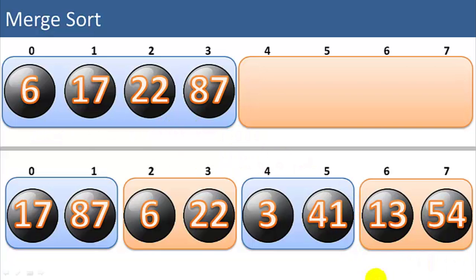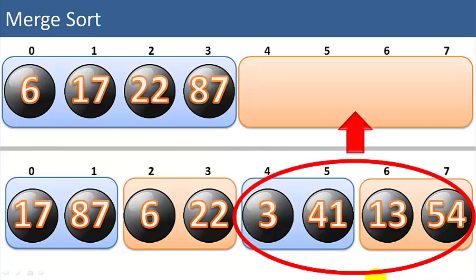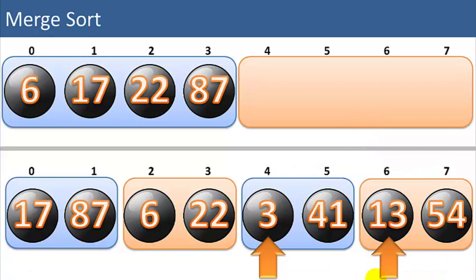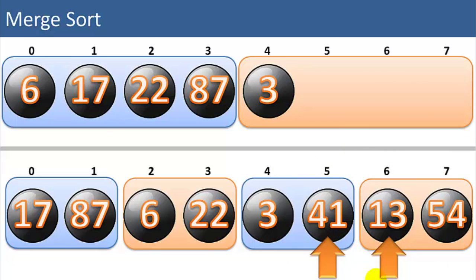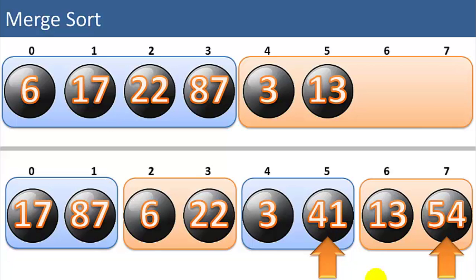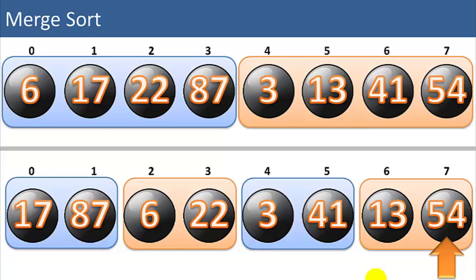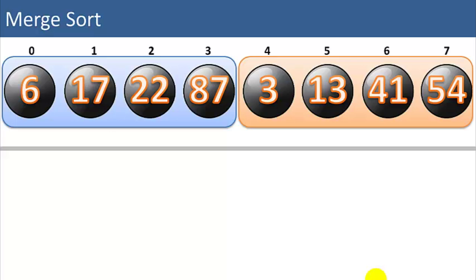Now we sort the other two lists and move them into the top list. We compare 3 to 13; 3 is smaller. We move that pointer to the 41. We compare 41 to 13; 13 is smaller. We move that pointer over. Now we compare 41 to 54; 41 is smaller. And we're done with that list, so we copy up the rest of the items in the right list. Now we have two lists with four items each that are in sorted order.